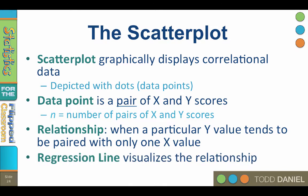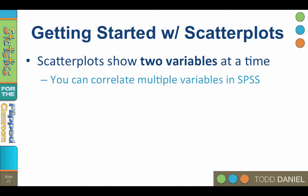In the real world, however, the relationships are less than perfect. So it is a good idea to add a regression line to our scatter plot to better visualize the relationship between the variables. Scatter plots can only show two variables at a time. You can correlate multiple variables in SPSS, but the scatter plots will only be two at a time.